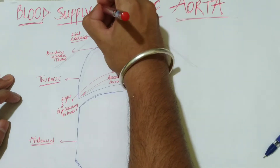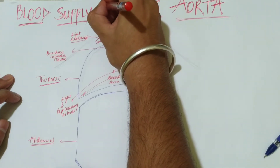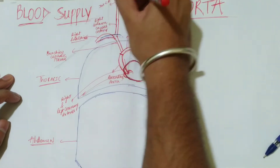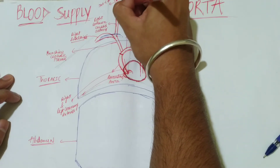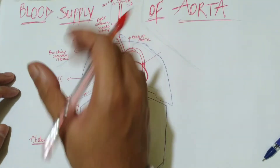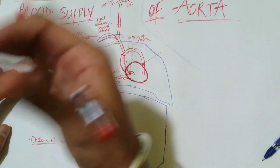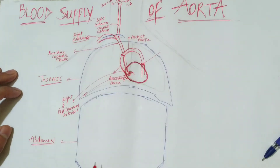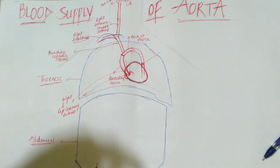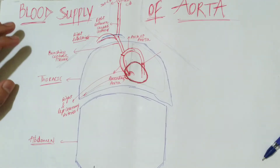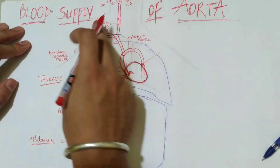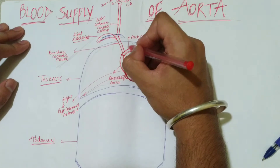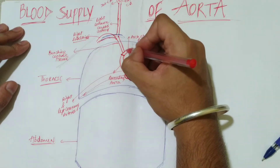The right common carotid further divides into two branches: the internal carotid artery and the external carotid artery. We will discuss these arteries and their branches specifically in the next videos. This was the arrangement of arteries on the right side.